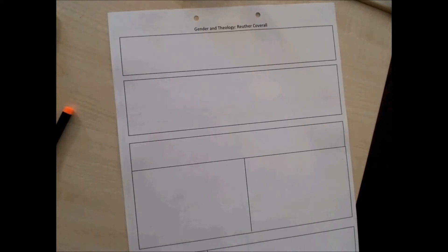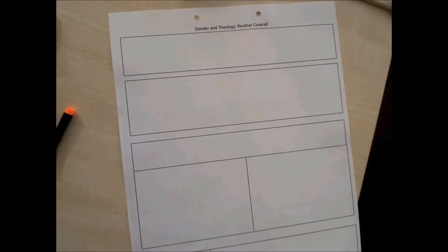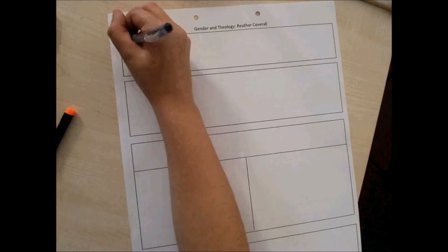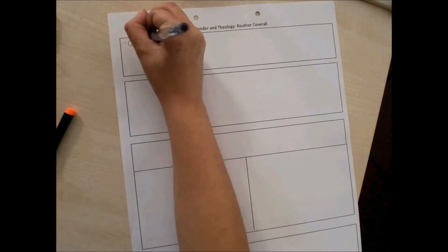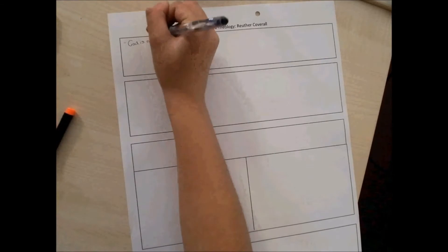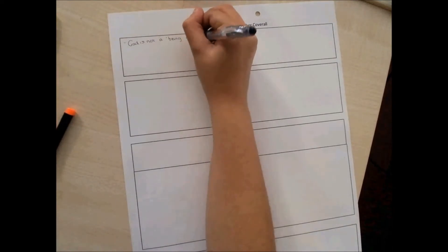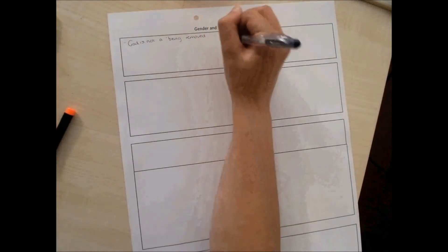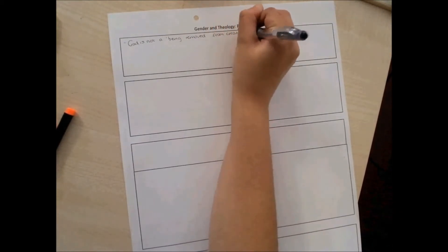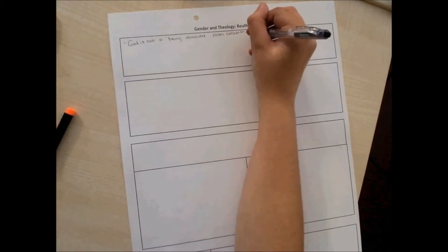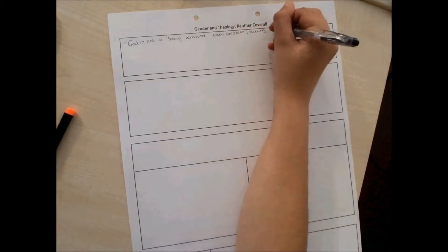Top first box then is for Rosemary Radford Ruther's quote. Now, you don't have to write the whole quote down, but I do think it's a really good place to start an essay. God is not a being removed from creation, ruling it from outside in a manner of a patriarchal ruler. God is the source of being that underlies creation and grounds its nature and future potential for continual transformative renewal in a biophilic mutuality. Quite a mouthful.